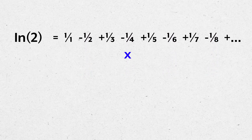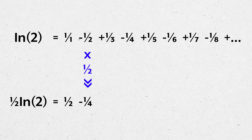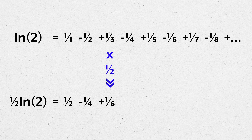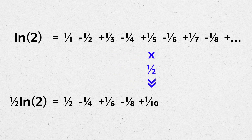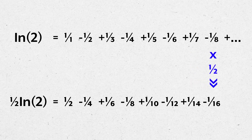If we multiply this equation by one half, we get: one half ln 2 equals 1/2 minus 1/4 plus 1/6 minus 1/8 plus 1/10 minus 1/12 plus 1/14 minus 1/16 and so on.